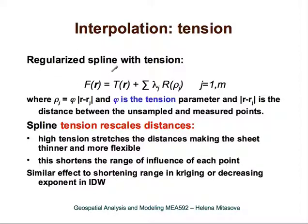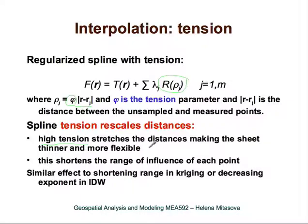We will use regularized spline with tension to show the properties of spline functions in general. In this function, the radial basis function depends on distance, but this distance is rescaled by a parameter called the tension parameter. The tension parameter allows us to tune the bending energy of the surface by rescaling the distances. With high tension, it stretches the distances, which makes the sheet thinner and more flexible, adding flexibility to the surface so that it can be rougher. This also shortens the range of influence of each point.